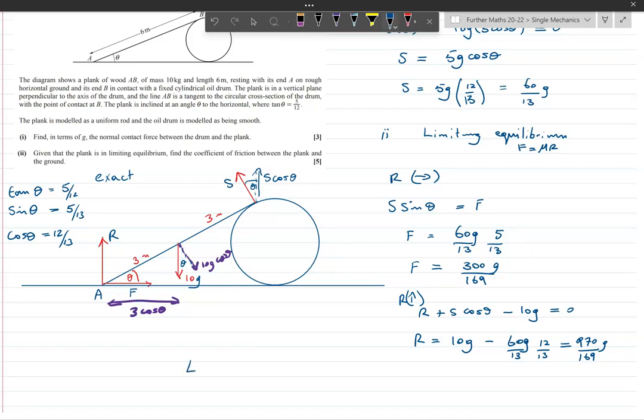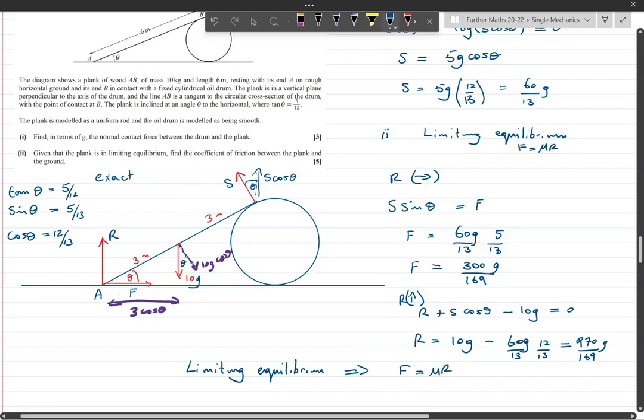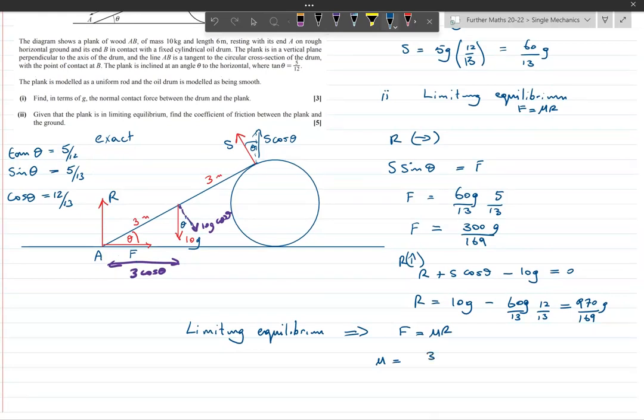So we've got R and we've got F. This is F and this is R here. So we can go back to what I was saying, limiting equilibrium, F equals mu R. So that gives me mu equals F over R. So that's 300 over 169g over 970 over 169g. And that all cancels down, of course, to 30 over 97, because g cancels and there's a factor of 10 in the 300 over 970 that cancels to 30 over 97.